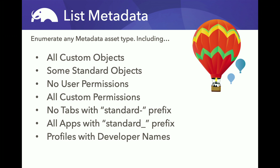Let's talk about list metadata. This should be pretty simple — it gives you a list of the stuff. You can get a list of your custom objects, custom tabs, or any of the other metadata types. But list metadata does some weird things. If you ask for custom objects, it'll give you all of your custom objects, but only some of your standard objects. For example, history objects will not be returned by list metadata. What's going on is Salesforce has different channels of APIs. The data API gives you all the data objects, the tooling API gives you a different set, and the metadata API only talks about custom objects really relevant to metadata. A history object can't be used in a profile, so it's not in the metadata API.